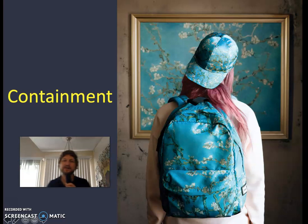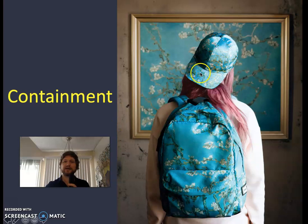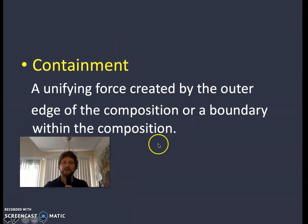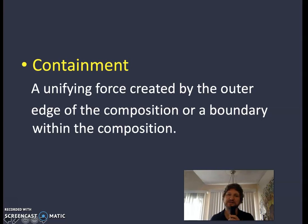The second principle is containment. What is the border that we put around something — the outer limits — and how do we acknowledge that? In this Van Gogh painting, she's wearing a hat and a backpack with the same image on it, just contained in very different shapes. Containment is a unifying force created by the outer edge of the composition, or a boundary within the composition.